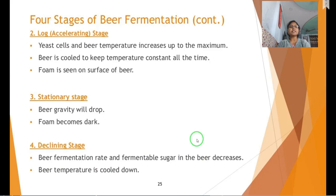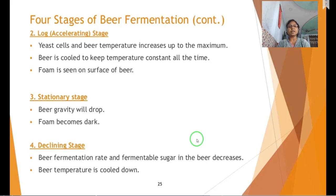(2) Log/accelerating phase: cell numbers and beer temperature increase; beer is cooled to keep temperature constant; foam appears on the surface due to proteinaceous material. (3) Stationary phase: beer gravity drops and foam becomes dark. (4) Decline phase: fermentation rate and fermentable sugar in the beer decrease and beer temperature cools down.